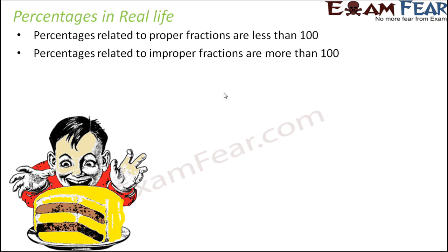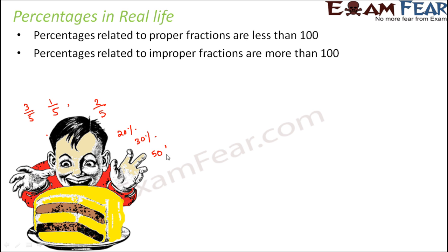When you eat a pizza or a cake, you often talk about the percentage of pizza that you can eat. Let's say you have a pizza cut into 5 equal slices. You can eat 3 slices out of 5, or 1 slice out of 5, or 2 slices out of 5 — any such fraction. You can always get a corresponding percentage, like 20%, 30%, or 50% of the pizza.